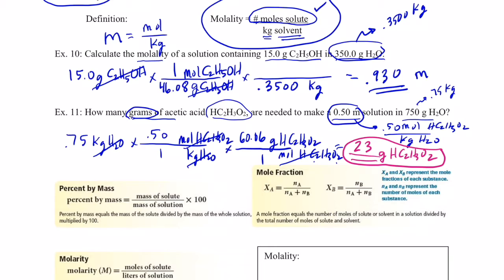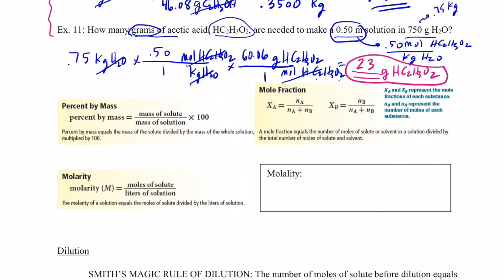So molality: moles of solute per kilogram of just the solvent. Now a quick review of the concentration units we've covered. Percent by mass is the mass of solute divided by the mass of the entire solution, multiplied by 100. Mole fraction is moles of solute divided by total moles of solution, or moles of solvent divided by moles of solution — left as a fraction, not converted to a percentage.